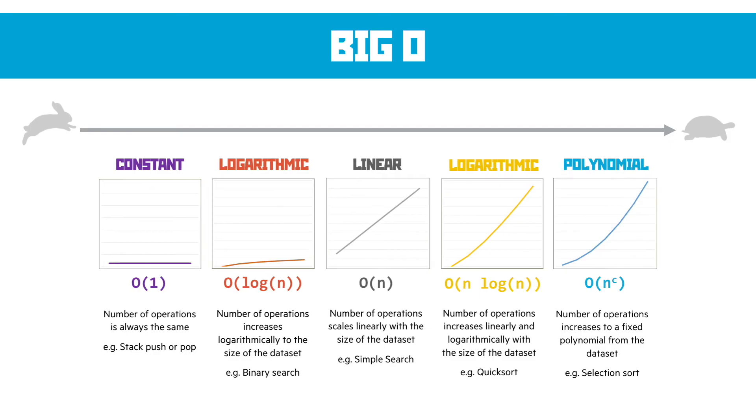Polynomial then, which is a little bit worse than that, which is where the data set N has an indice. In this case, we'd write it as big O N to the C, where C is the power that we raise it to. For instance, N squared, N cubed, and so on. That's the number of operations increases to a fixed polynomial from the data set. For example, selection sort works with this.